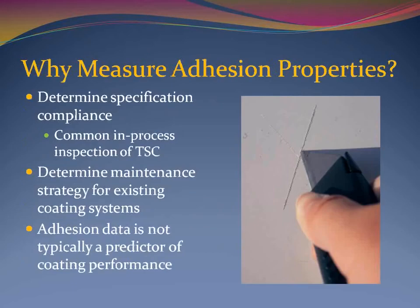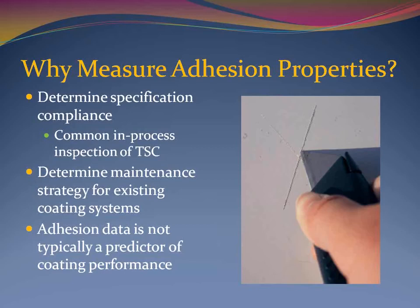The first question posed is: why are we interested in assessing the adhesion of a coating or lining system? First and foremost, the painting specification may invoke a requirement for a minimum adhesion value or rating prior to placing the structure into service. As long as the adhesion of the coating exceeds the minimum specified value or rating, the actual adhesion value isn't that critical. Section 6.4 of the Tri-Society coating specification for thermal spray coatings or metallizing invokes a requirement for tensile bond measurements using a self-aligning adhesion tester and provides minimum tensile bond requirements based on the type of wire used. Adhesion testing is also a valuable tool for determining whether an existing coating can withstand the stresses of an overcoat system or whether total removal and replacement is a better maintenance strategy.